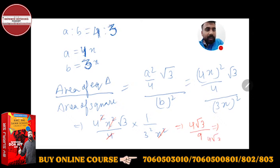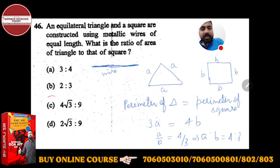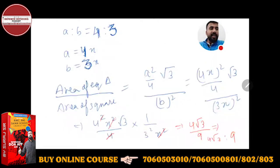So the answer will be 4 root 3 is to 9. 4 root 3 is to 9 is the answer. Option C is the right answer. 4 root 3 is to 9.